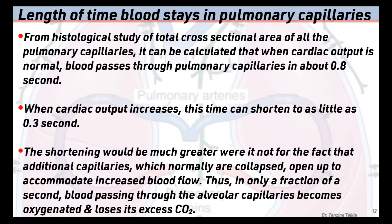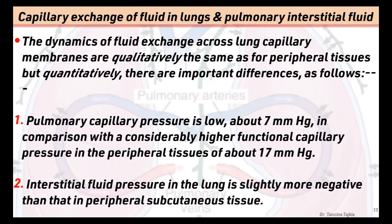For the total cross-sectional area of all pulmonary capillaries, it can be calculated that when cardiac output is normal, blood passes through pulmonary capillaries in about 0.8 seconds. When cardiac output increases, this time can be shortened to as little as 0.3 seconds. The dynamics of fluid exchange across the lung capillary membrane are qualitatively the same as for peripheral tissues, but quantitatively there are important differences. First, pulmonary capillary pressure is low at about 7 mmHg, compared to a considerably higher functional capillary pressure in peripheral tissue of about 17 mmHg.